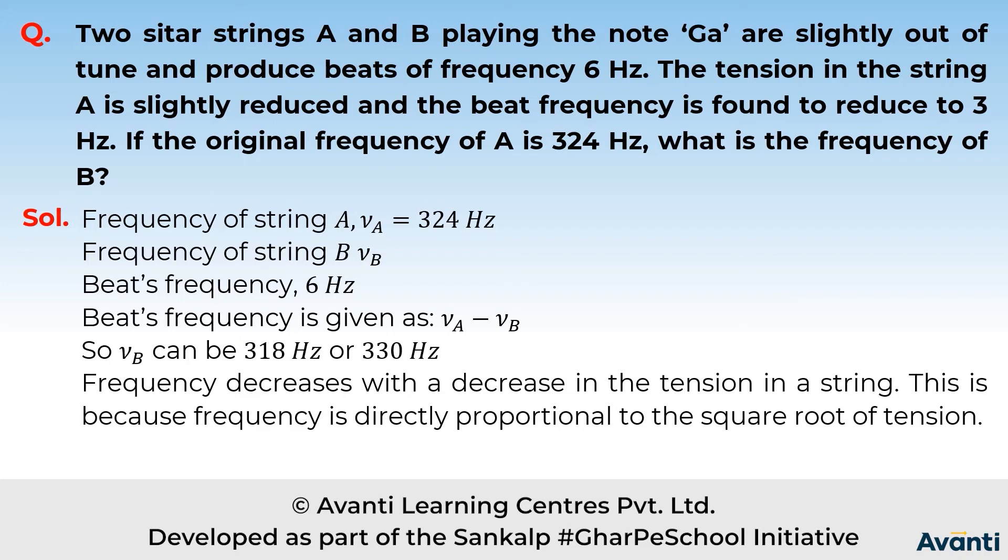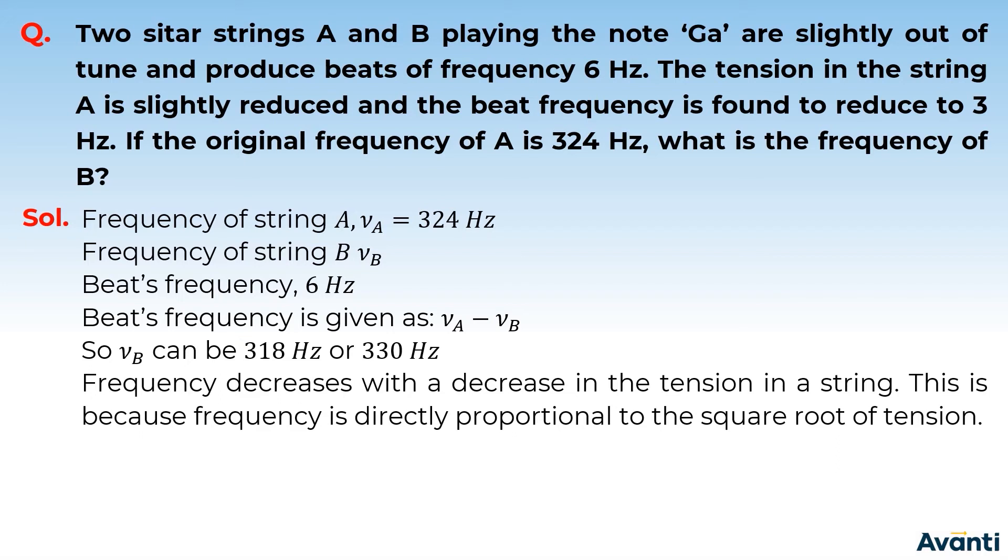If we assume that string B's frequency is 330 Hz, then the initial difference was 6 Hz. Now after loosening string A, the new beat frequency is 3 Hz. This means that the difference between A and B's frequencies